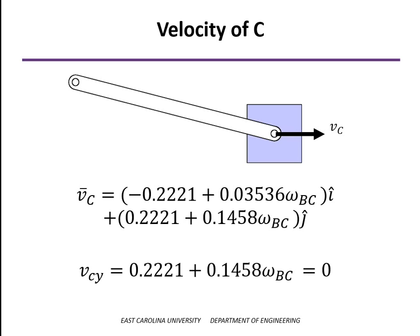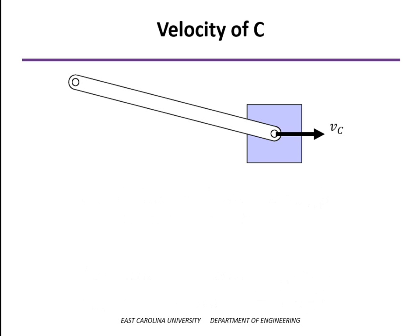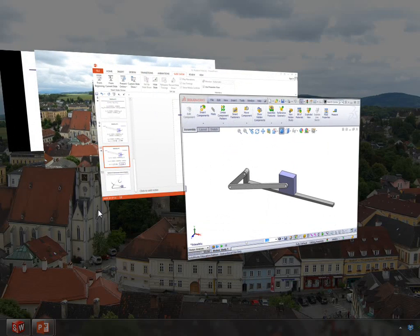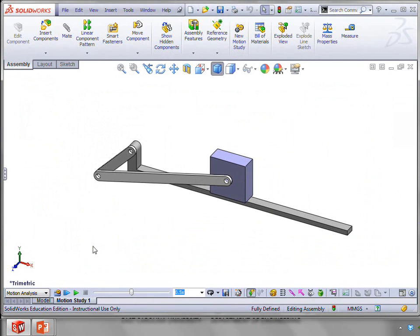What that tells us is that the y component of the velocity must be equal to 0. From that, we can solve for the angular velocity BC. Minus one and a half radians per second is minus 87 degrees per second. We can check that by looking at our simulation again.